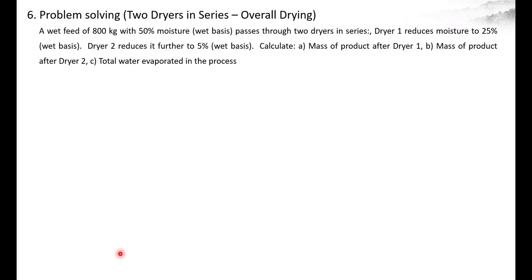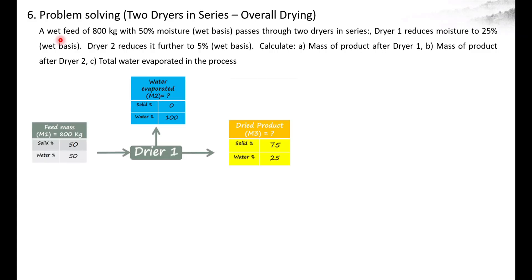Moving on to the last problem in drying, where two dryers are kept in series — we are drying a product in a dryer and the product from the first dryer is used as feed for the next dryer. Problem: A wet feed of 800 kg with 50% moisture passes through two dryers in series. Dryer 1 reduces moisture to 25%, Dryer 2 reduces it further to 5%. Calculate the mass of product after each dryer and the total water evaporated.